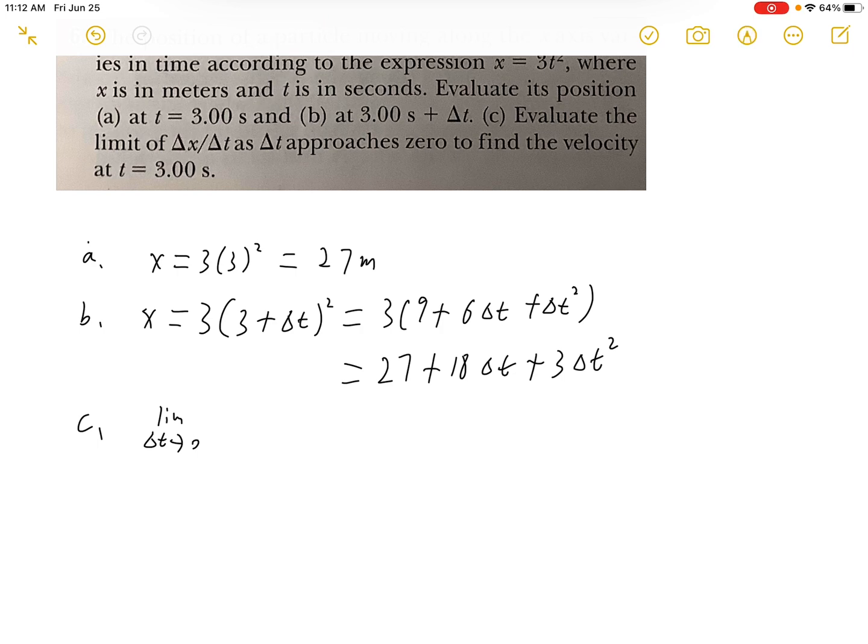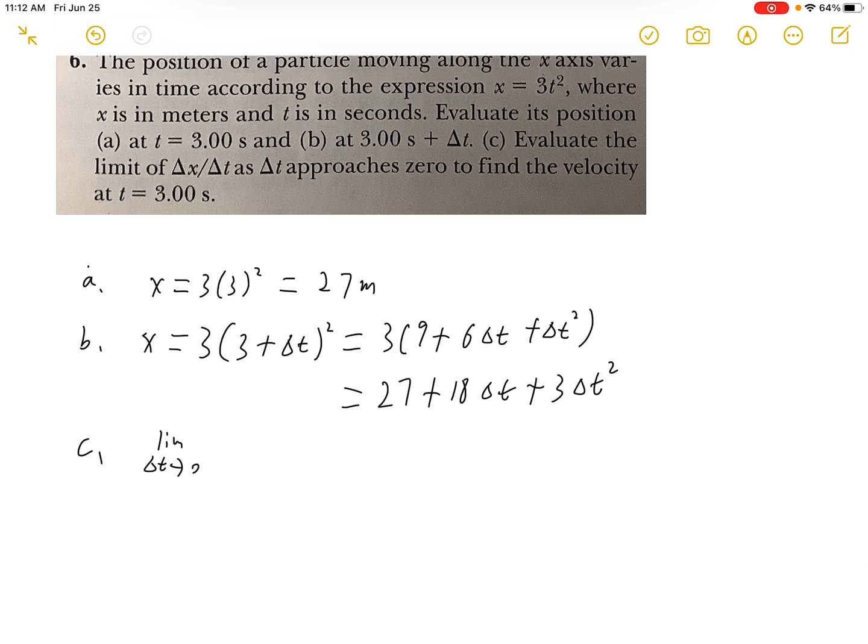So Δx is final position minus initial position. The final position is going to come from part B. So we have 27 plus 18Δt plus 3Δt squared. And initial position is from part A, so it's minus 27.